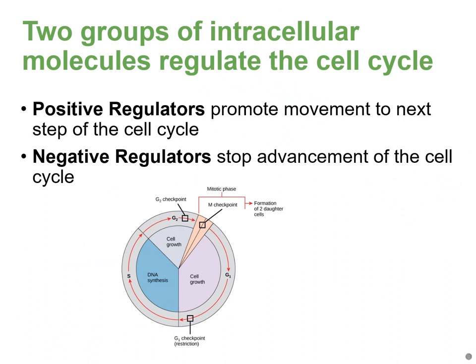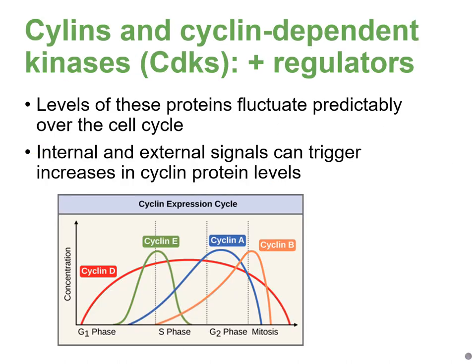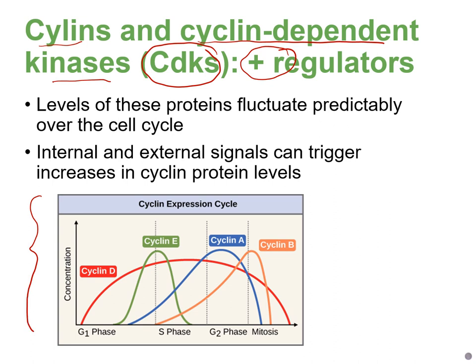We also have intracellular molecules that can regulate the cell cycle. Positive regulators promote the cell cycle and allow it to move forward, while negative regulators stop advancement. Examples of positive regulators include cyclins and cyclin-dependent kinases, abbreviated CDKs. Cyclins have different concentration levels depending on the phase of the cell cycle, and they bind to CDKs to promote cell cycle progression.